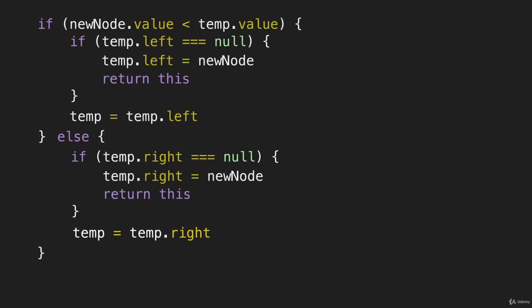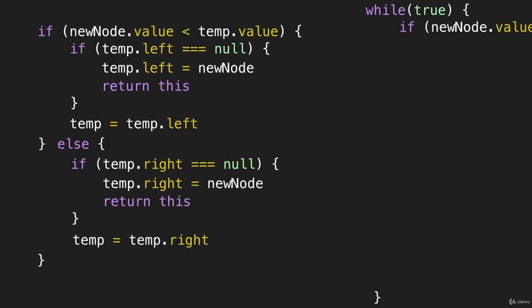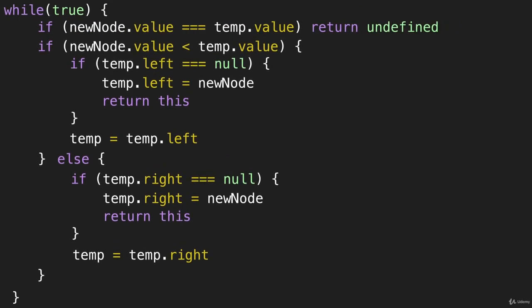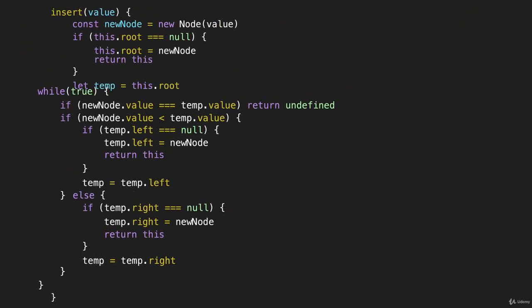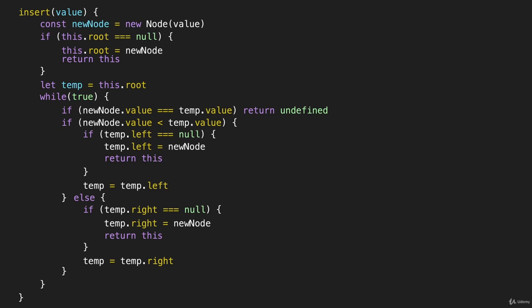Let's look at this code with the rest of the code in the while loop. That top if statement was for the situation where the new node was equal to something we already had in the tree. Now let's look at this while loop together with the rest of the code for the method — that is our entire insert method.